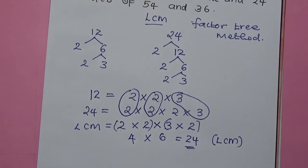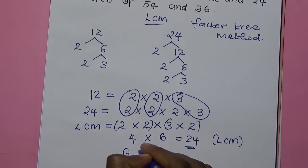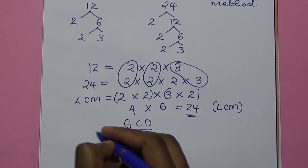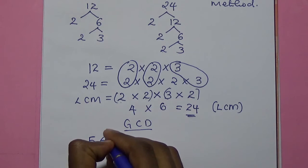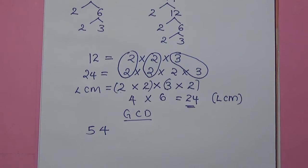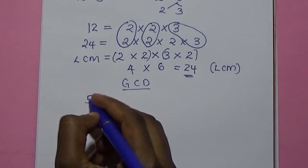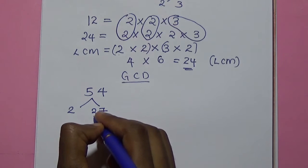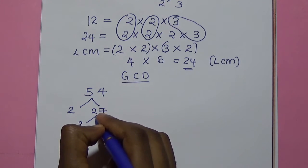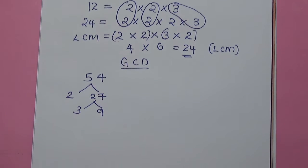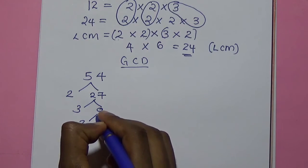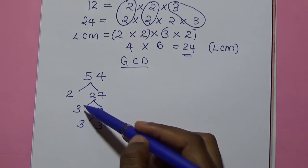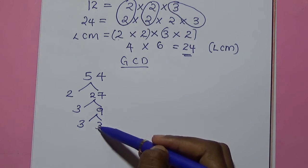Now we calculate the GCD. The GCD we are calculating is for 54 and 36. We start with 54 using the factor tree method. This will be 2 because of 27, then 3 because of 9, then 3 and we are left with 3. So the prime factors of 54 are 2 times 3 times 3 times 3.